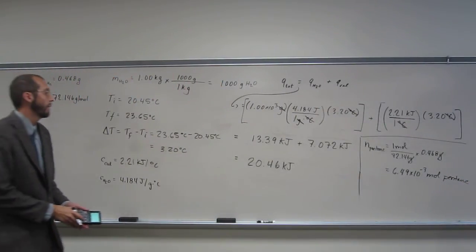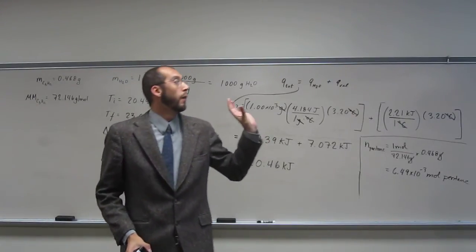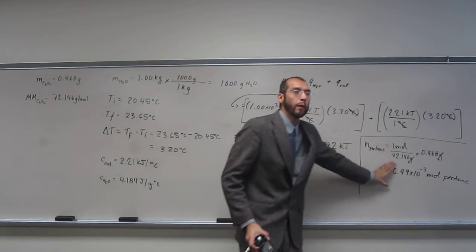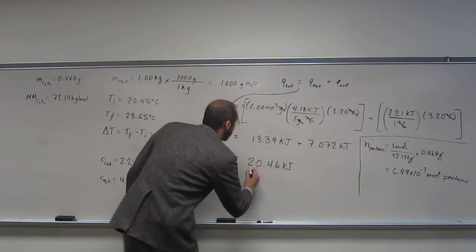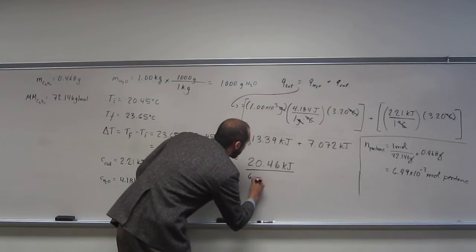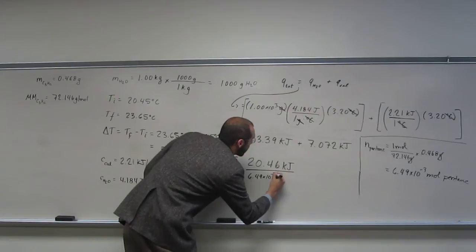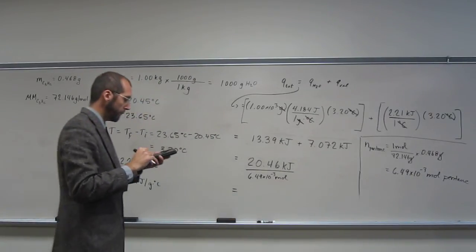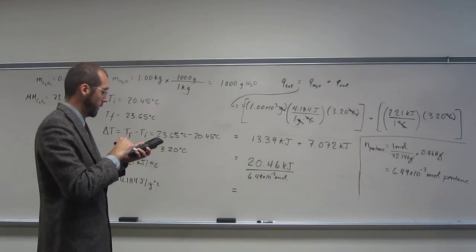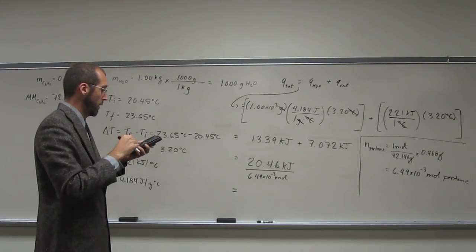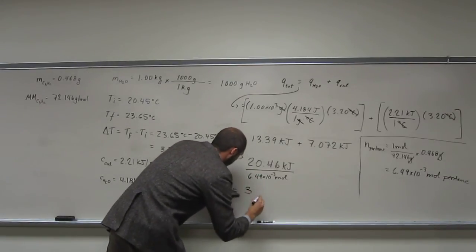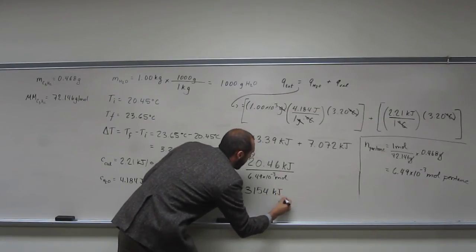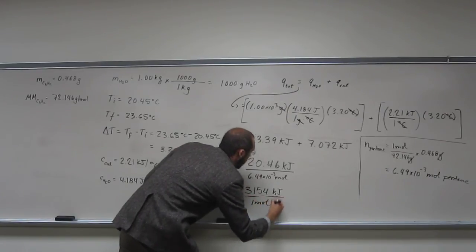So that's how many moles of pentane you have. So if we're looking for the combustion, the heat of combustion per mole, this is the heat of combustion for this many moles. So we want to know the heat of combustion per mole. All we've got to do is take that number and divide it by this number. 20.46 kilojoules divided by 6.49 times 10 to the negative third moles. And that will give us kilojoules per mole. Everybody okay with that? When we do that we're going to get, I'm just taking this out to a bunch of significant figures for right now, 3,150 kilojoules per one mole.